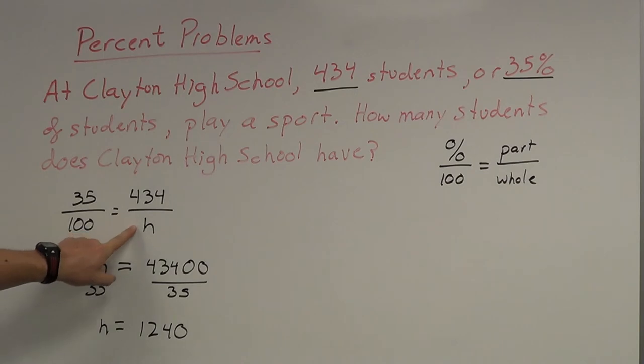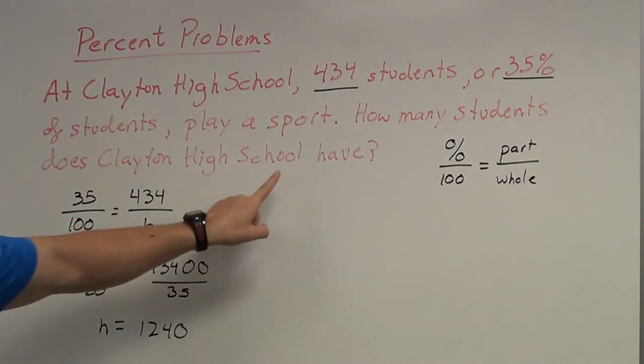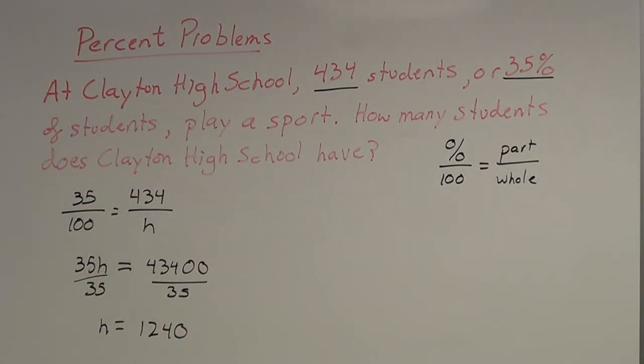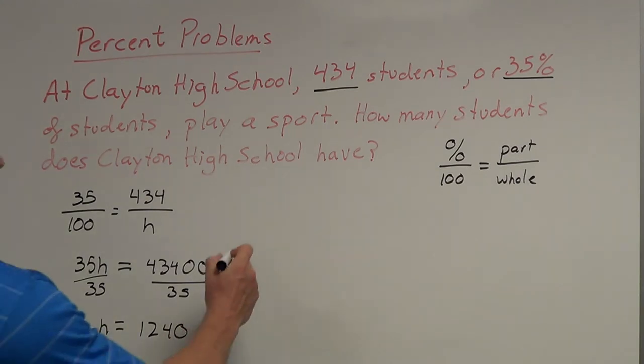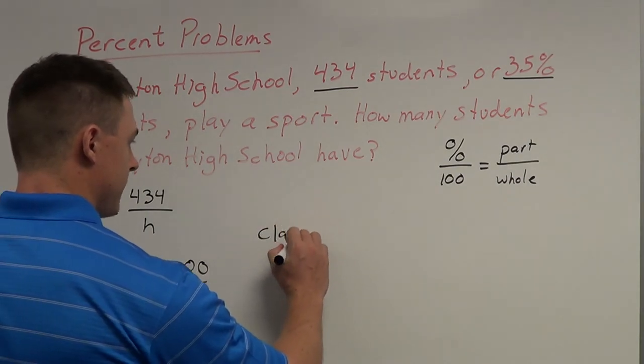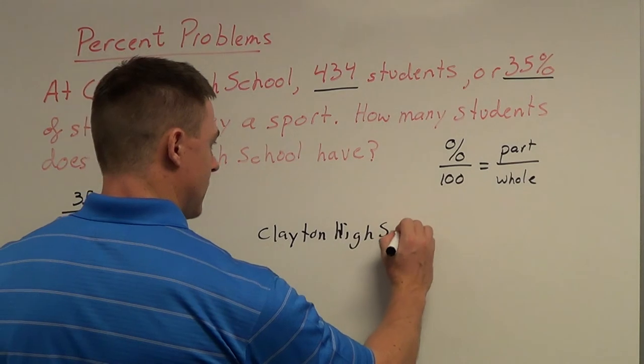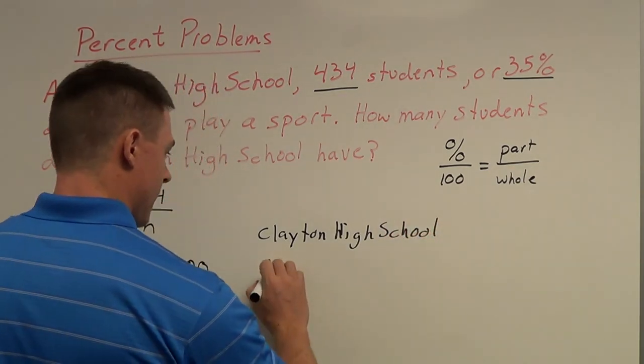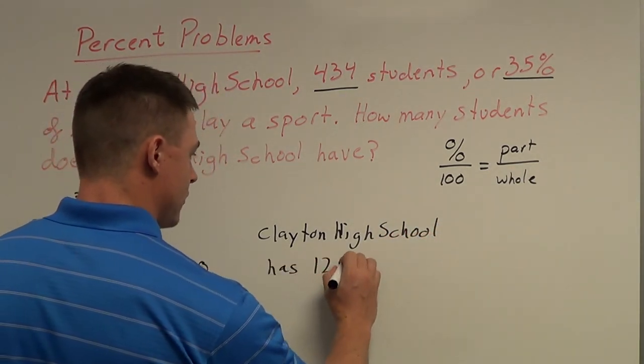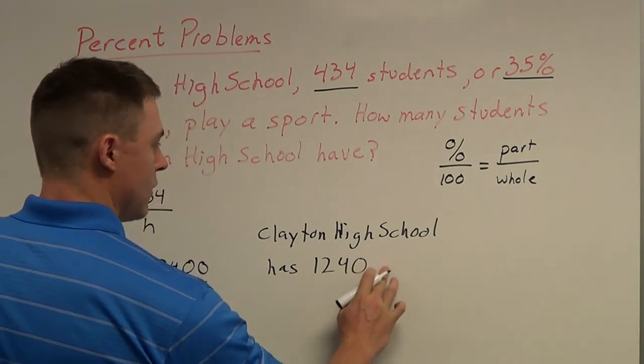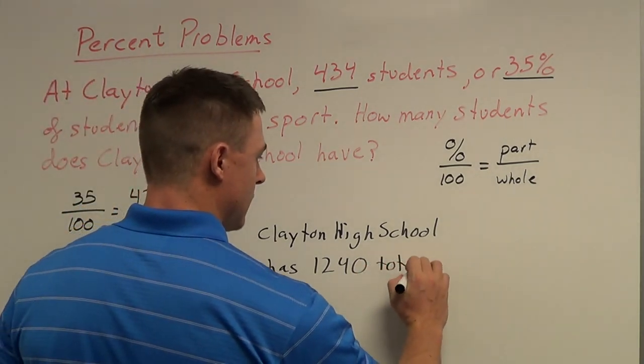So, in this case, H is equal to 1,240. I chose H to be the whole student body. How many students does Clayton High School have? H tells me the whole school. It tells me every student that's in that school. So, my answer would be that Clayton High School has 1,240 total students.